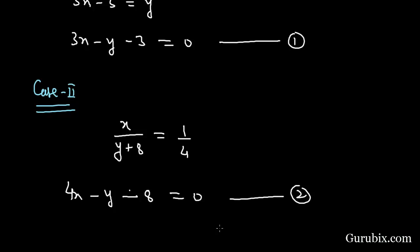We can apply any of the three algebraic methods: elimination, substitution, or cross multiplication. Here we shall apply the elimination method. We observe that the coefficient of y in both equations is the same, so we can easily subtract equation number 1 from equation number 2 to get the value of x.